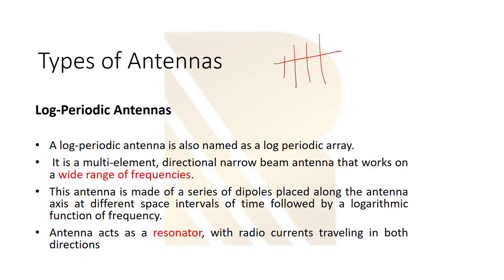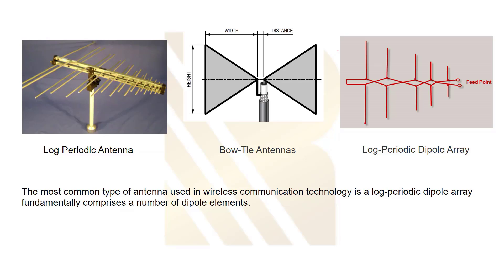The antenna acts as a resonator with the radio currents traveling in both directions. Here you can see the photos of log periodic antenna: the bow tie antenna, which is really famous, and the one which is commonly used is log periodic dipole array, the third one. It's used in variety of applications.